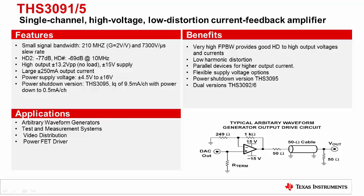The THS3091 and THS3095 are single channel high voltage buffers. These amplifiers are typically used to provide the final drive stage into 50 ohm loads on the output of waveform generators. The output of these stages can go as high as plus or minus 13 volts peak to peak at plus or minus 16 volts supply. If more drive strength is required, these amplifiers can be cascaded in parallel configurations to provide more drive current. Care must be taken in these cases to ensure proper limitation to reduce distortion.